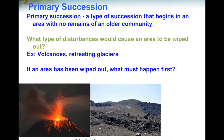Once those glaciers melt underneath, there's nothing — no soil, no plants, no animals. It's just rocks. These types of disturbances cause the area to not look like how it used to be; it's completely bare. Once an area has been wiped out with no life and no soil, what needs to happen first?